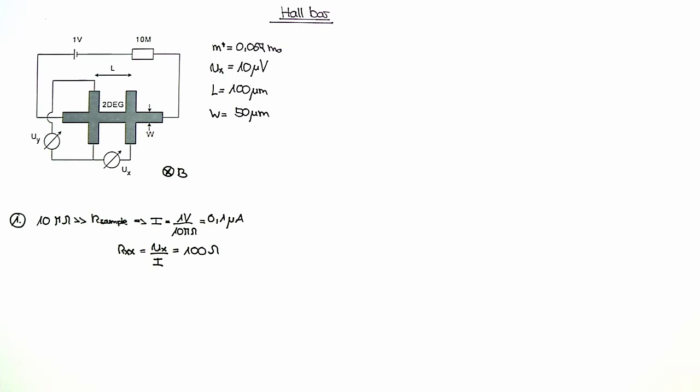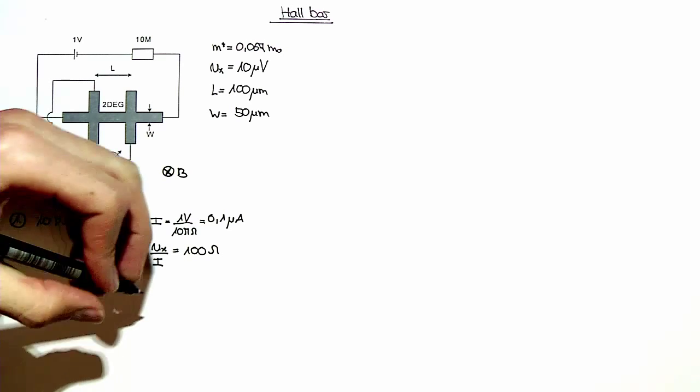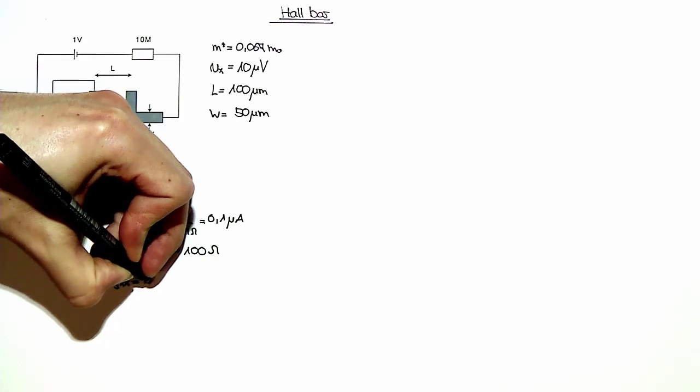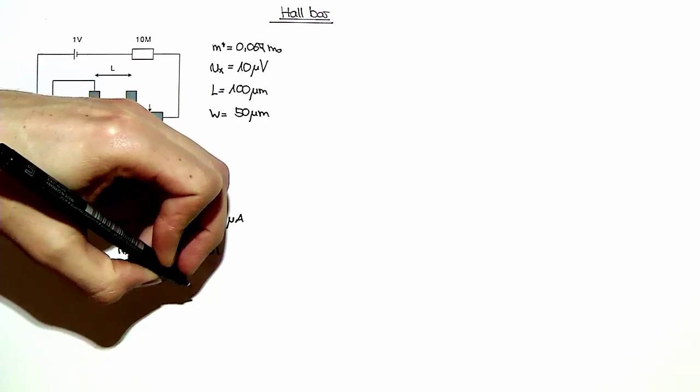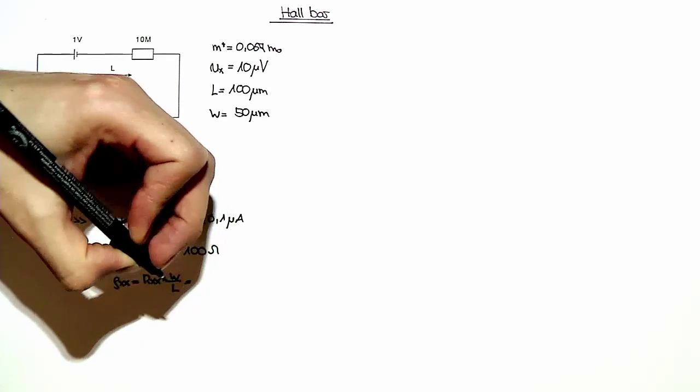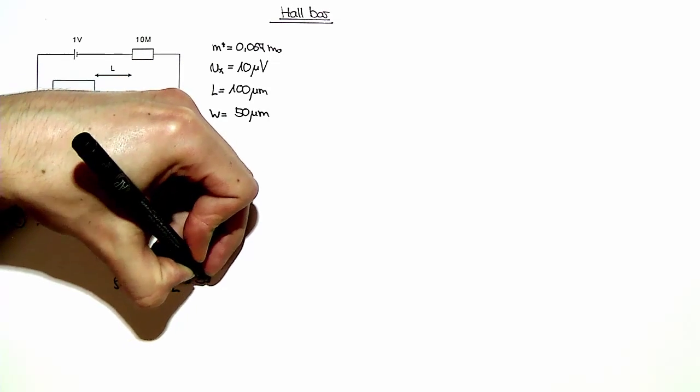Now we are also asked to calculate the geometry independent resistivity, which is given as Rxx being rho_xx times W over L, and this is 50 ohms.